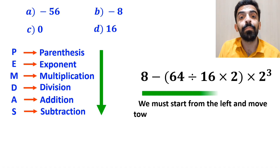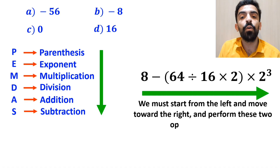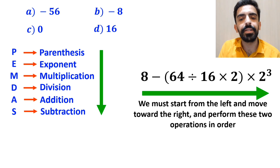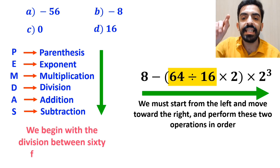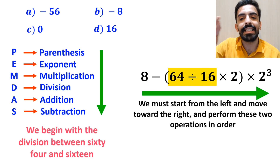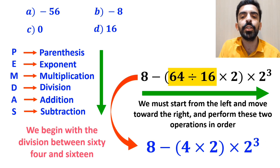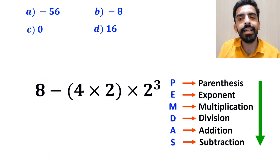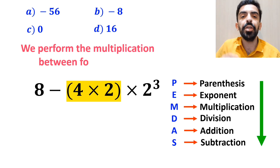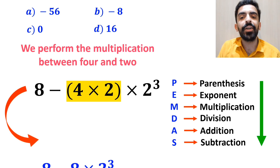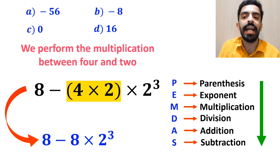It's very important to remember that multiplication and division have the same level of priority. In this situation we must start from the left and move toward the right and perform these two operations in order. So we begin with the division between 64 and 16, and this expression simplifies to 8 minus 4 times 2 inside the parentheses, multiplied by 2 cube. In the next step we perform the multiplication between 4 and 2 and write this expression as 8 minus 8 multiplied by 2 cube.